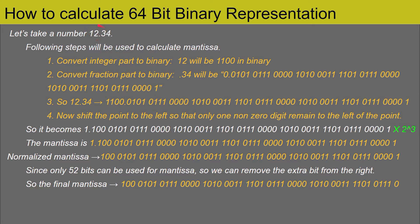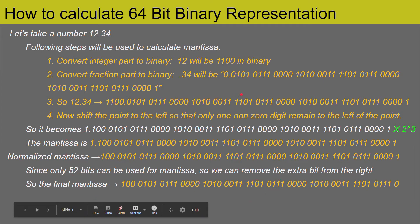The first step is to convert the integer part to binary. We'll take the integer part from this number and convert it — 12 becomes 1100 in binary. Then we will convert the fraction part to binary, so we pick 0.34 and convert it. I hope everyone knows how to convert a fraction or integer to binary; if not, you can search online. For now, our sole purpose is to understand the 64-bit binary representation.